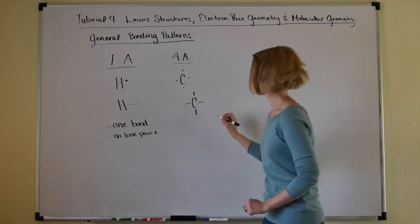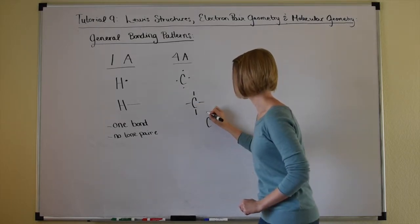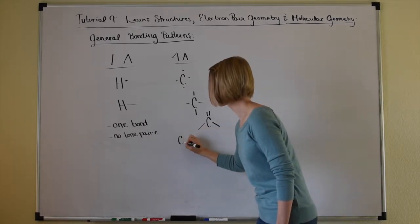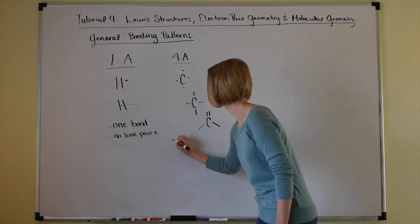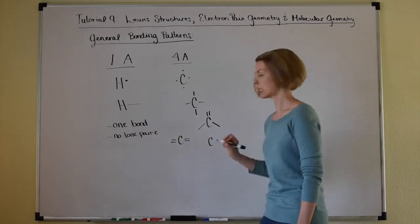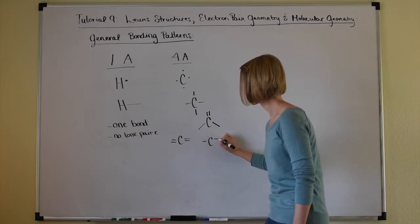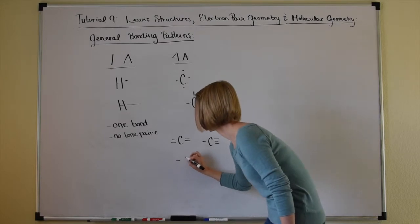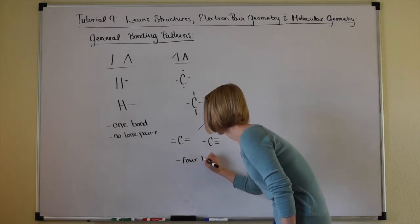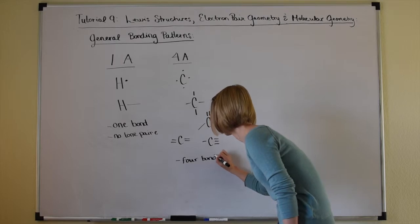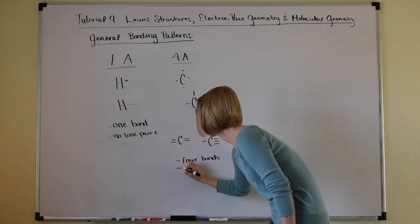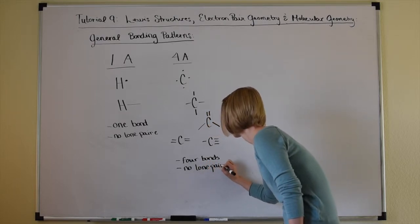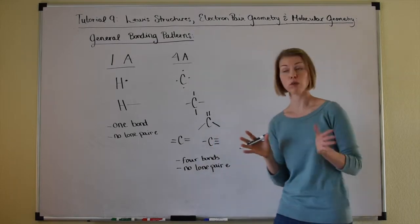Carbon could form four single bonds, or one double and two single bonds, or two double bonds, or one single and one triple bond — all resulting in four bonds and no lone pairs for carbon.